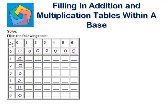1 times 1 is 1. 1 times 2 is 2. 1 times 3 is 3. 1 times 4 is 4. 1 times 5 is 5. 1 times 6 is 6. Now, 2 times 4 is 8. 8 minus 7 is 1, so this is written as 11 to the base 7, since 1 becomes the carryover.